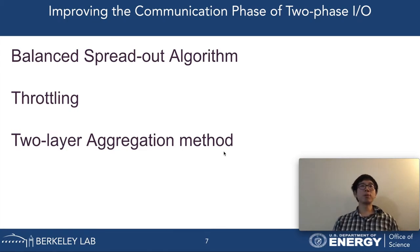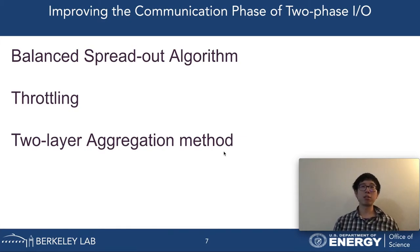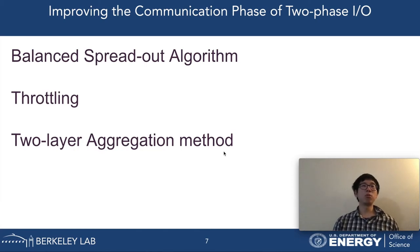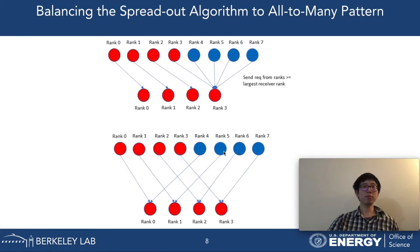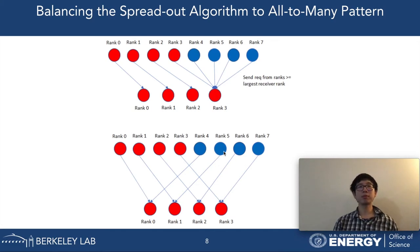My contributions for solving the communication contention in MPI_Alltoallw can be summarized as follows: I proposed a balanced version of the Spread-Out algorithm, I applied communication throttling to MPI_Alltoallw, and I presented a two-layered aggregation method. The first method is a generalized version of the Spread-Out algorithm for all-to-many personalized communication patterns. The original Spread-Out algorithm may enter a case where a receiver posts receive requests for a huge number of senders in a single MPI_Alltoallw function.